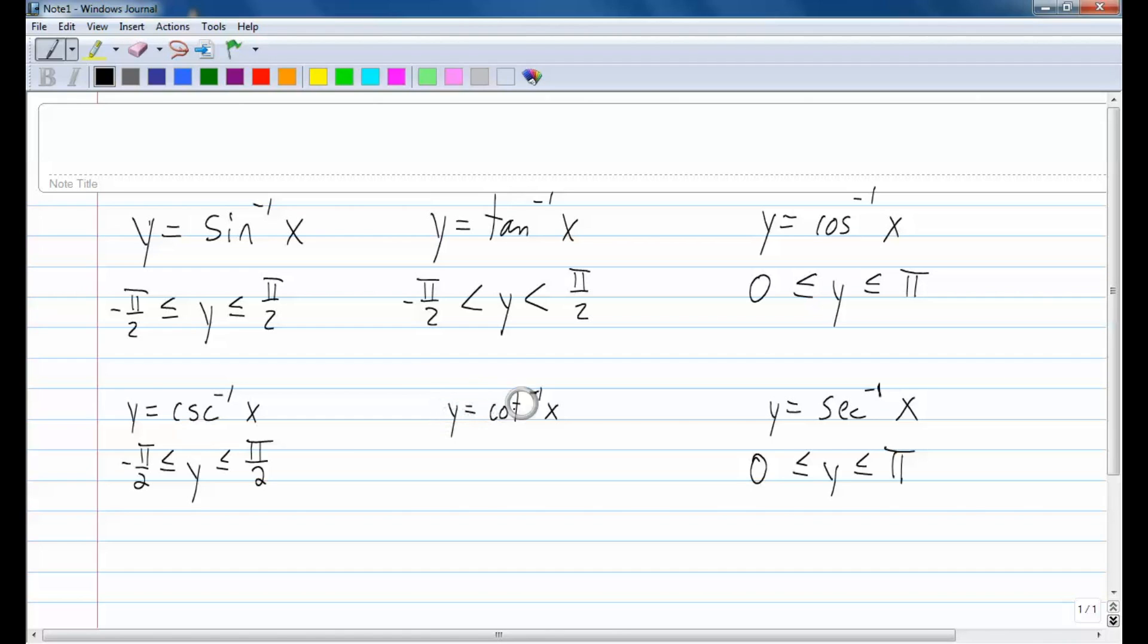And then we have inverse cotangent of x which would be the reciprocal of inverse tangent of x. Now, remember that inverse tangent would not exist without sine and cosine. Well, tangent would not exist without sine and cosine because tangent is sine over cosine.